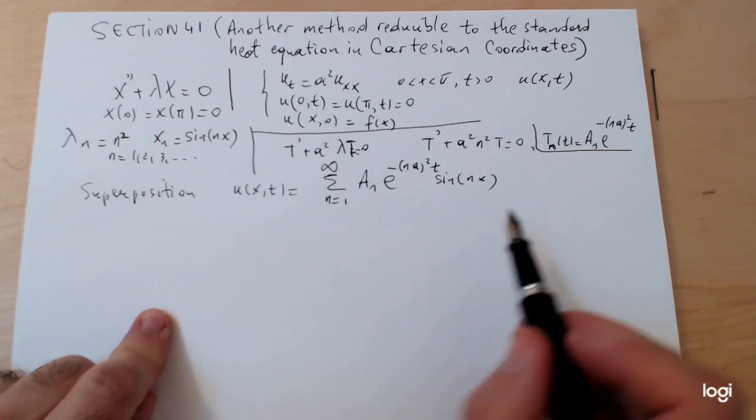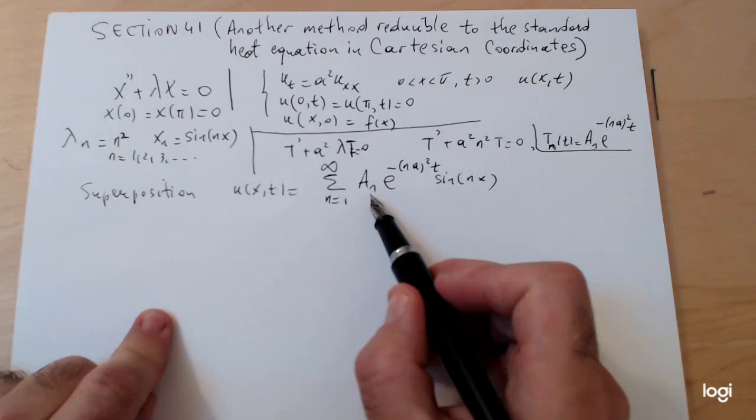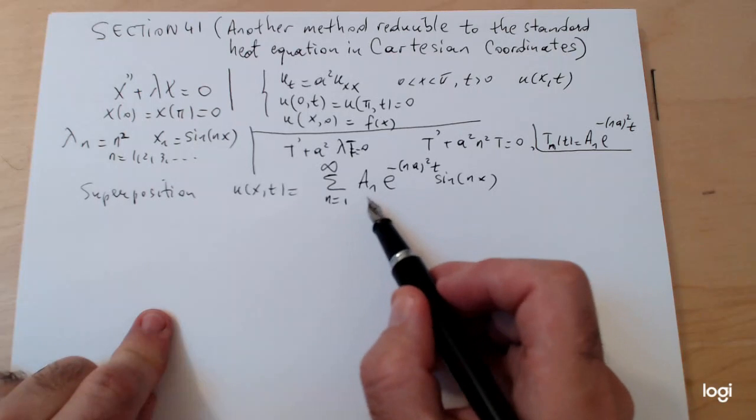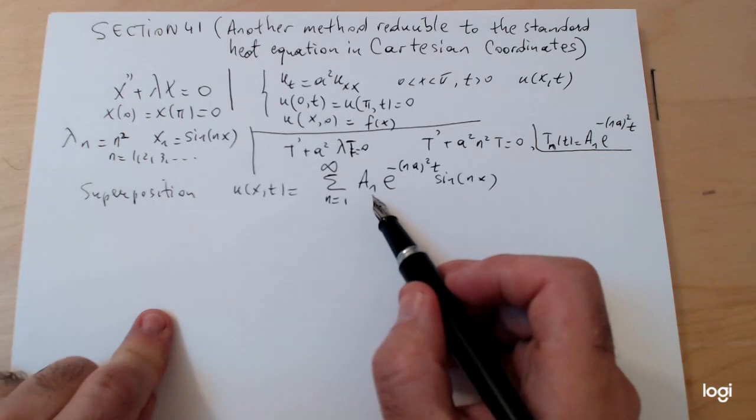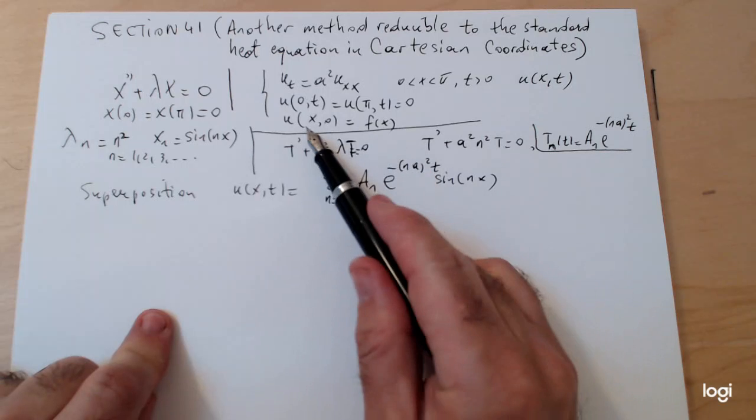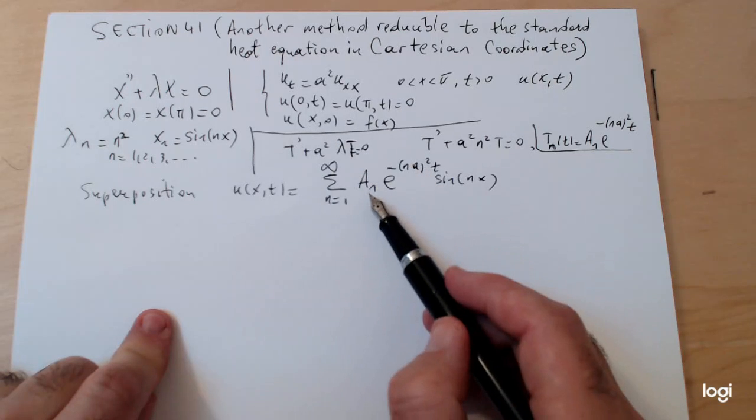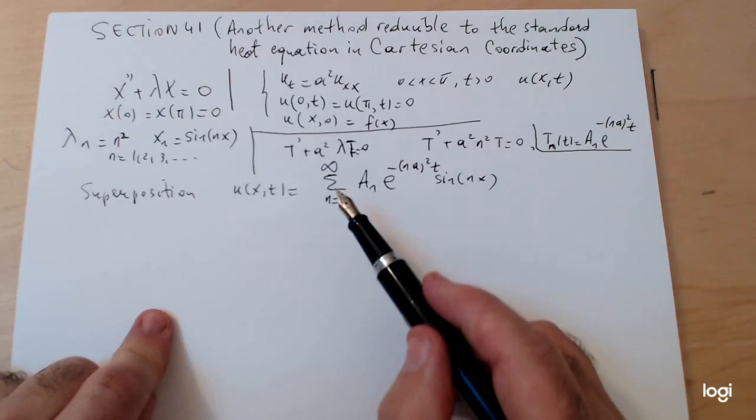The only stuff to be established yet is the value of these constants a_n, and this is the time when you actually impose the initial condition in the problem, in this case the initial temperature.